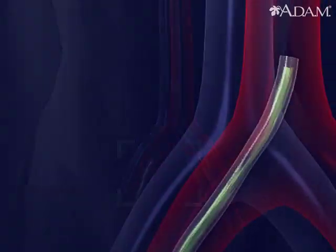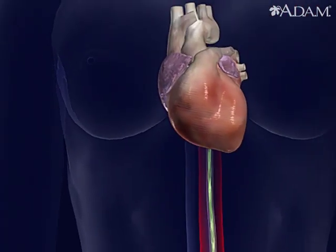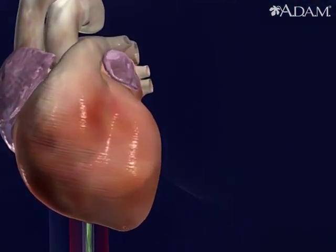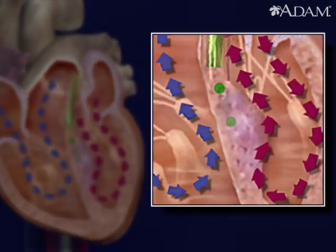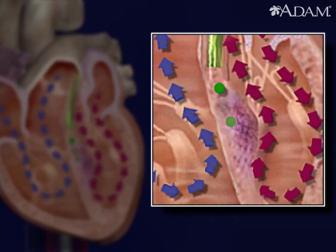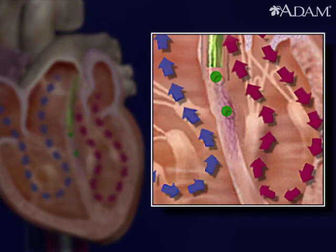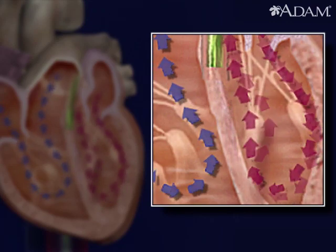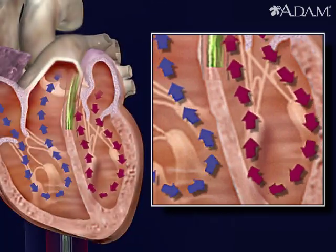To treat it, a catheter is inserted into the heart. It's used to apply concentrated alcohol that shrinks the diseased section. Now the heart can function normally.